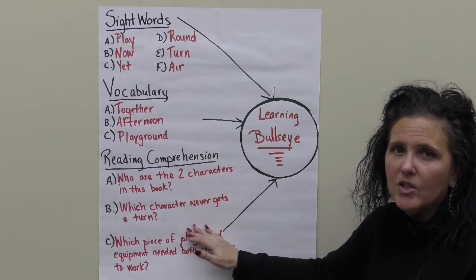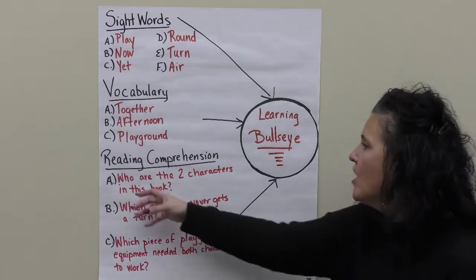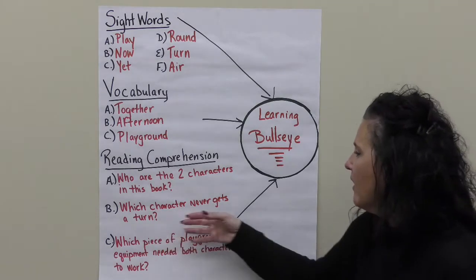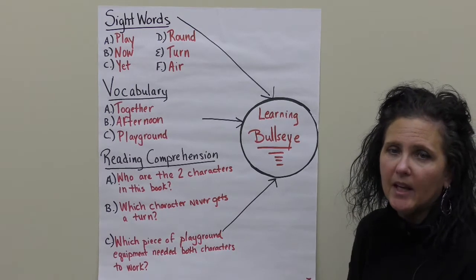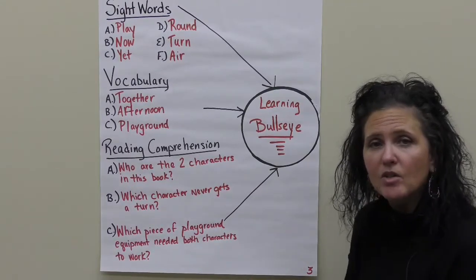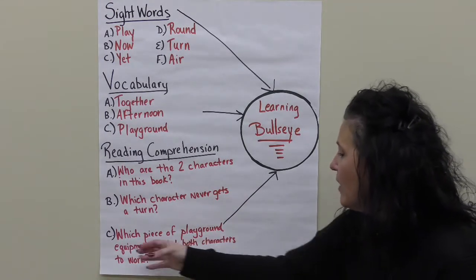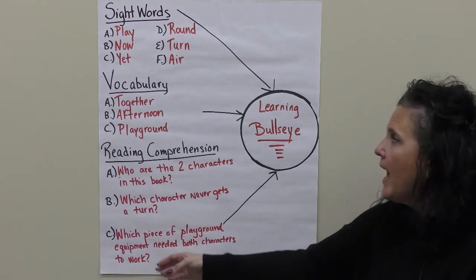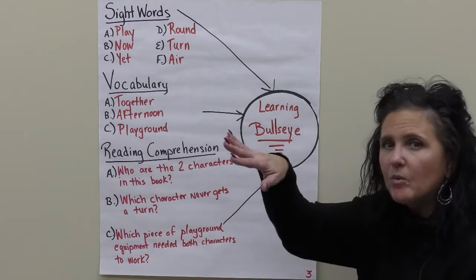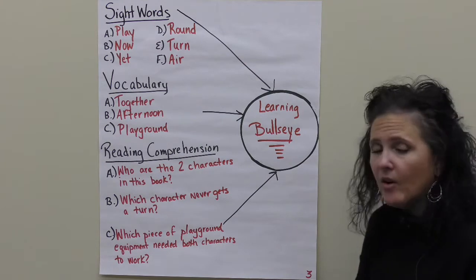If we look at a couple of reading comprehension questions — remember when we did lesson four, when you're reading ask yourself who are the characters and what are they doing. Who are the two characters in this book? One was Oscar, the other was Tilly. Which character never gets a turn? In the beginning, Oscar never gets a turn because Tilly won't let him. Then Tilly never gets a turn because Oscar won't let her. And which piece of playground equipment needed both characters to work together? That would be the seesaw — when someone goes down, the other goes up. If you sit on the seesaw by yourself, nothing happens. So they had to work and play together on that piece of equipment.